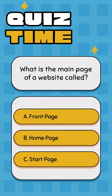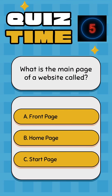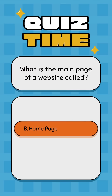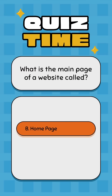What is the main page of a website called? A: Front Page, B: Homepage, C: Start Page. Correct answer: B, Homepage.